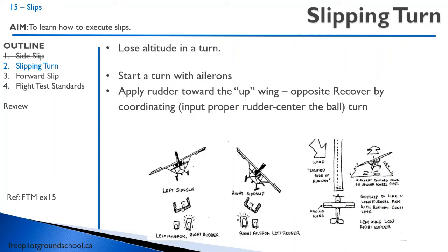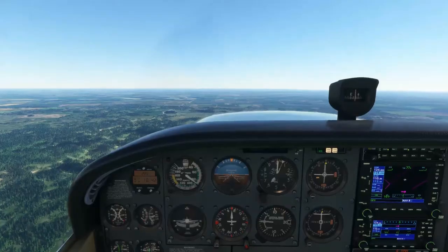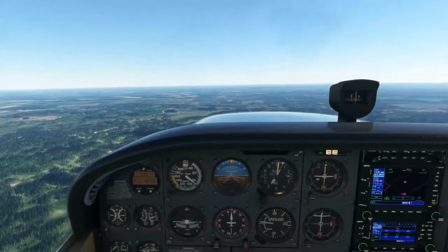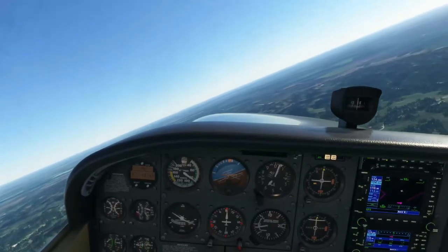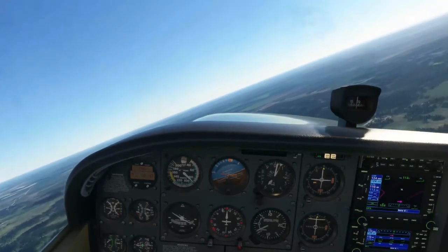Next, we have a slipping turn. A slipping turn is used to lose altitude in a turn. We start a turn with the ailerons — let's say we're going to the left, so we apply a left control yoke input — but instead of applying left rudder, we apply right rudder. The airplane isn't going to turn terribly well; it's kind of going to fly straight. We can pull back a bit and have the airplane come around, which is useful if we're high and need to line up on final for a landing. Roll the aircraft into a banked attitude and instead of coordinating the turn with the rudder, apply opposite rudder. Notice the ball is to the right, indicating a slip.